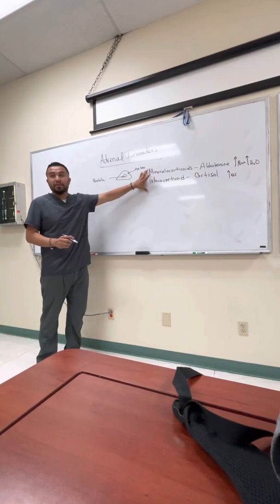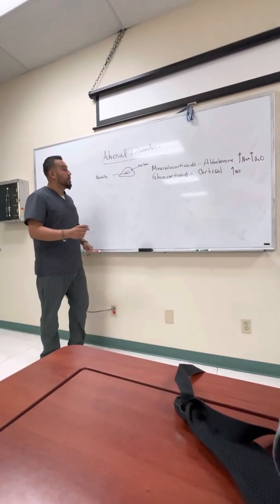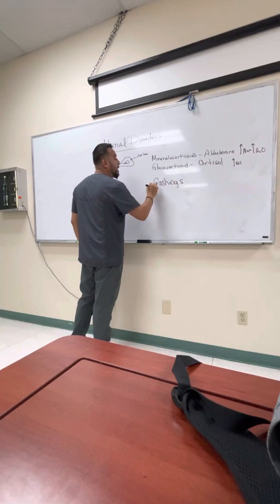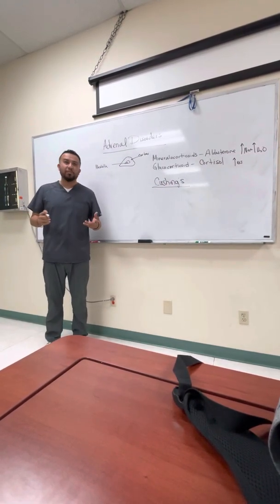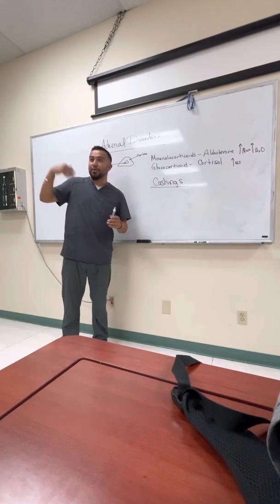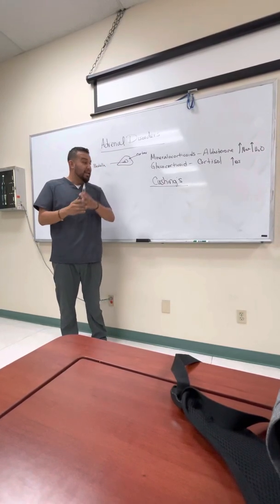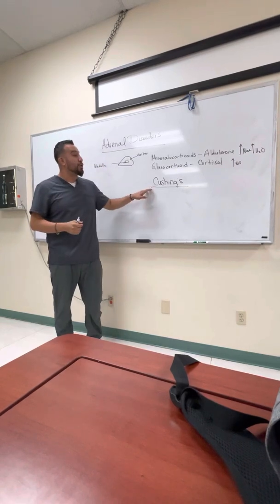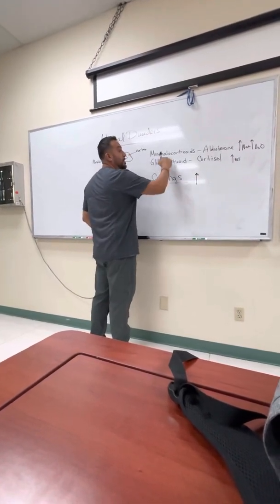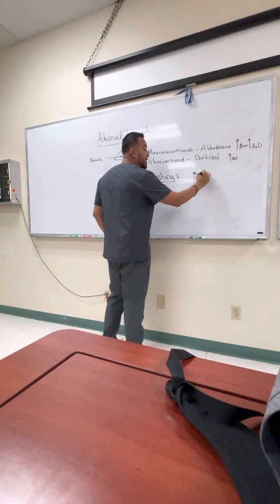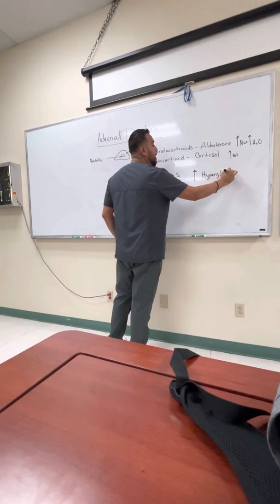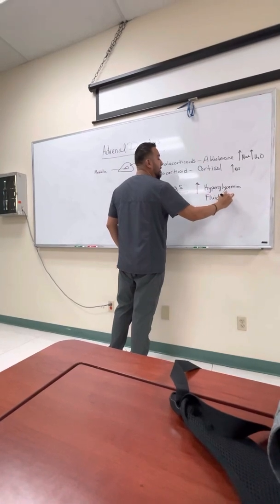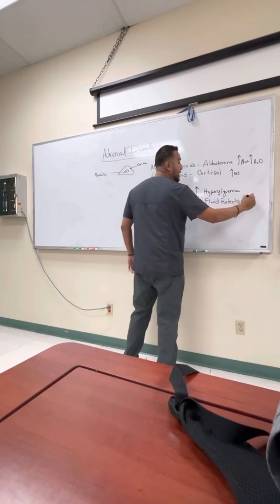There are two different disorders for these adrenal issues. The first is Cushing's syndrome. Students always have a hard time remembering if Cushing's is hyper or hypofunction — it's high. A mnemonic: what happens when you smoke some 'Cush'? You get high. So Cushing's syndrome is hyperfunction of both hormones — you're going to have hyperglycemia and fluid retention, including a high sodium level.